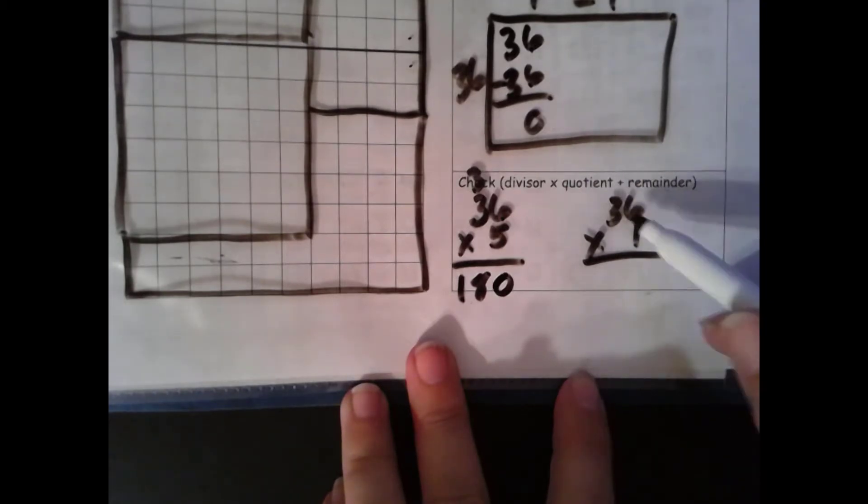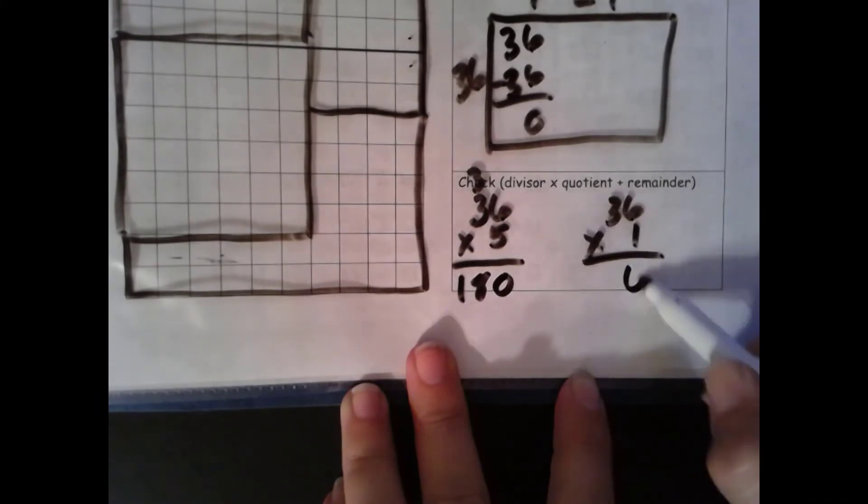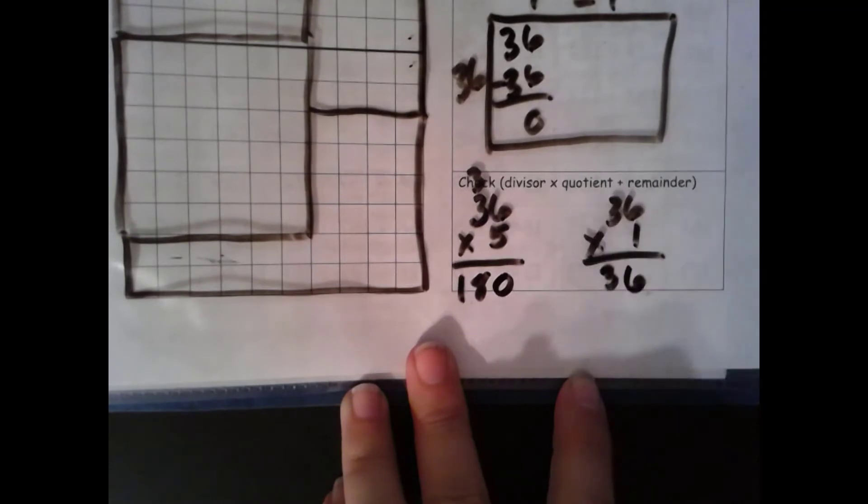Here we have the identity property of multiplication that says if you multiply by 1 it stays the same. 1 times 6 is 6. 1 times 30 is 30. 36 matches our dividend here. Check.